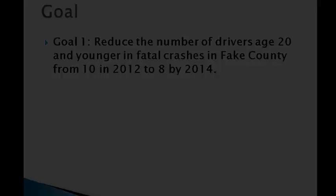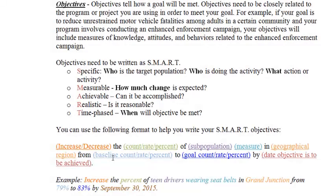Objectives is the next piece that the guidance addresses here. And I know from talking with CDOT and listening to some of the technical assistance calls that they have, that really these objectives are what CDOT is holding grantees accountable to. The goals are great and they tie to the performance measure, but it is possible that we may or may not achieve that long-term goal. What's really important is that the work that we're actually doing is tied to some sort of objective that we can measure and change. Jan, why don't you walk us through the objectives section here.